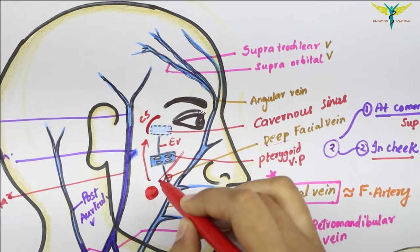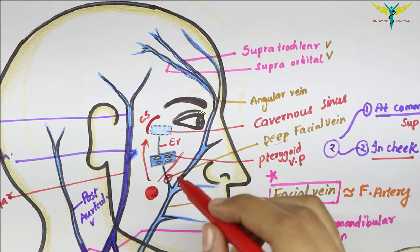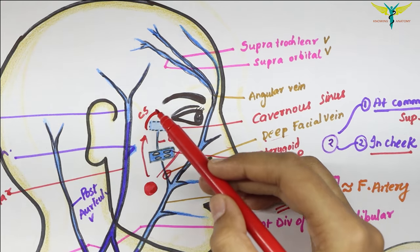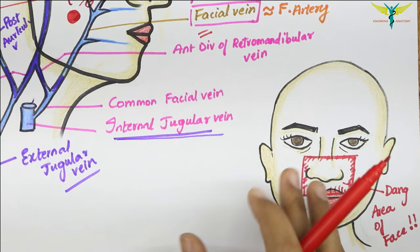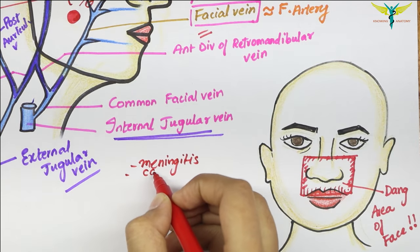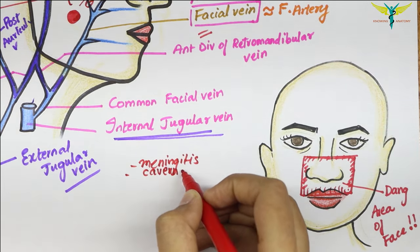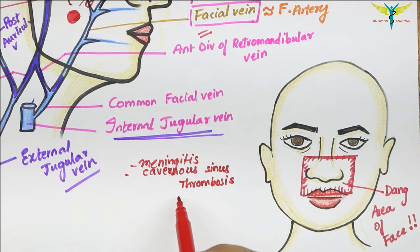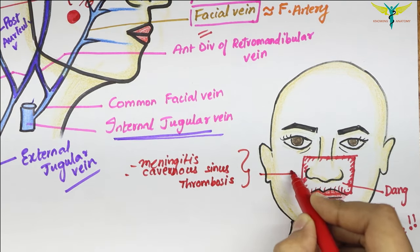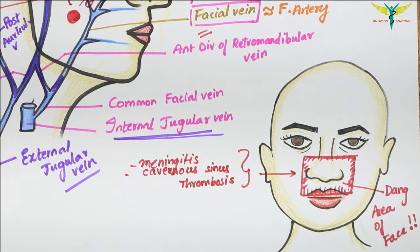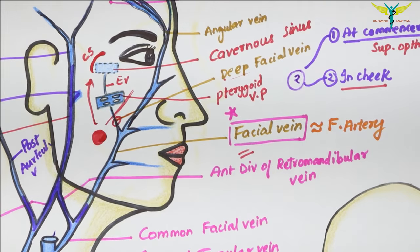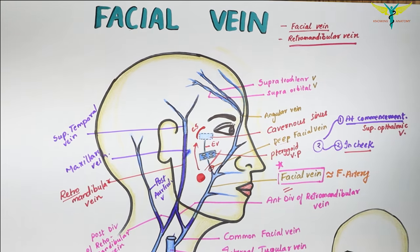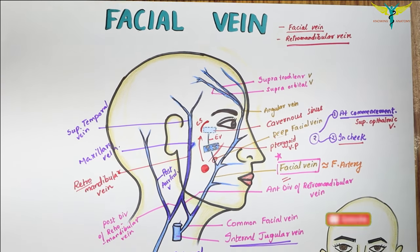The facial vein and its communications are devoid of valves in their lumens. This emboli reaching the cavernous sinus leads to meningitis and cavernous sinus thrombosis, which are life-threatening conditions. This is the reason this area is called the dangerous area of the face.